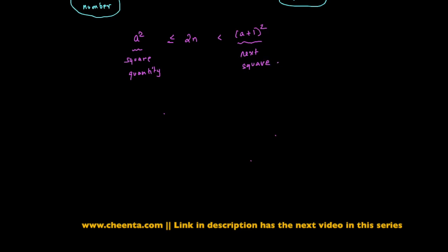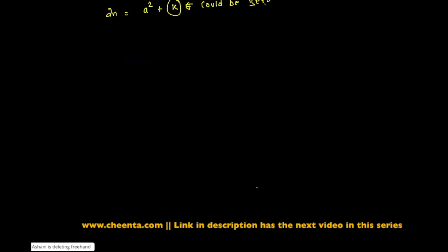So we can write 2n as a square plus some constant quantity. This could be 0, could be 0. If 2n is a square, if 2n is a square itself, otherwise there will be something. Now if that happens, square root of 2n, floor of that will be just a.